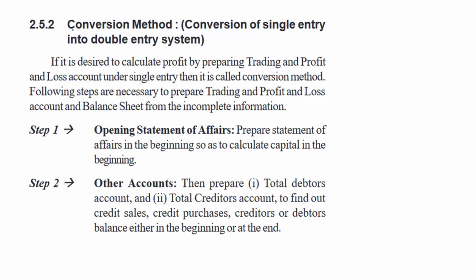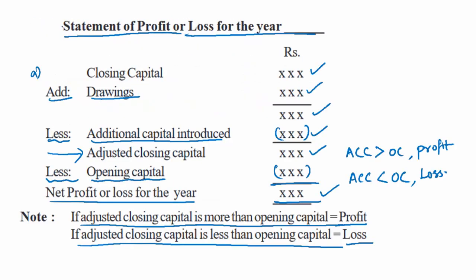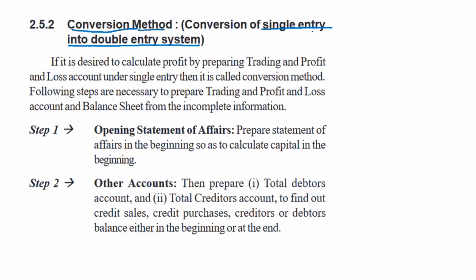The second method for finding profit is the conversion method, where we convert single entry into double entry system. In the first method, we derived profit by preparing a statement of profit or loss, which may not be convincing for many. So we go by the traditional trading and P&L account, converting single entry into double entry through the conversion method to find out the profit or loss.